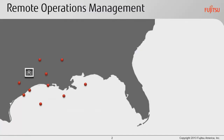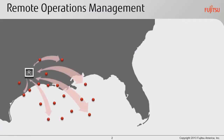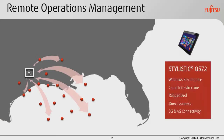In our first scenario, we have plant managers stationed at 40 of Raiden's remote locations. Each manager has a Stylistic Q572 tablet that they can use to connect to their corporate office via cloud infrastructure, direct connect, and 3G and 4G connectivity.